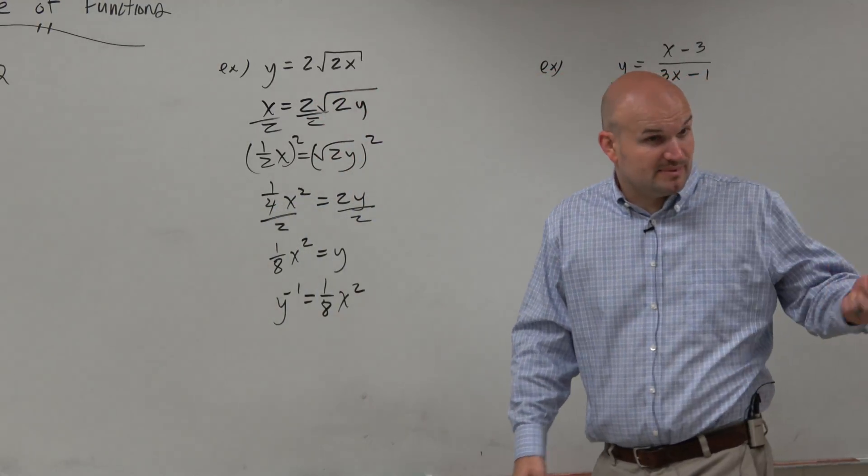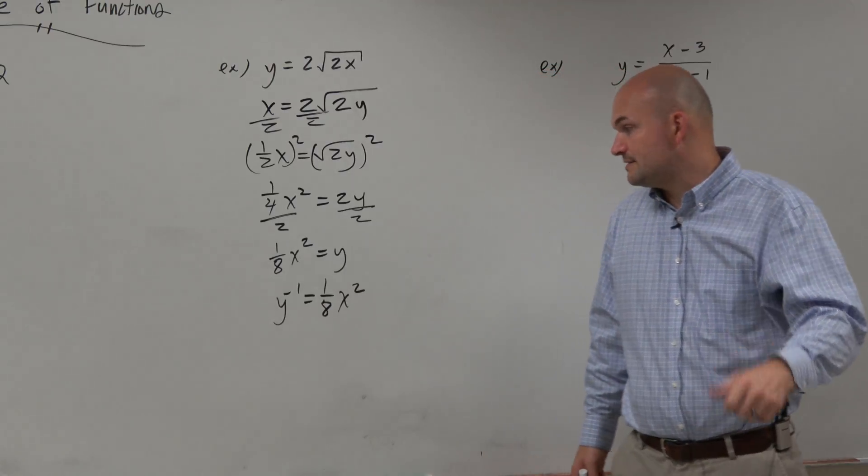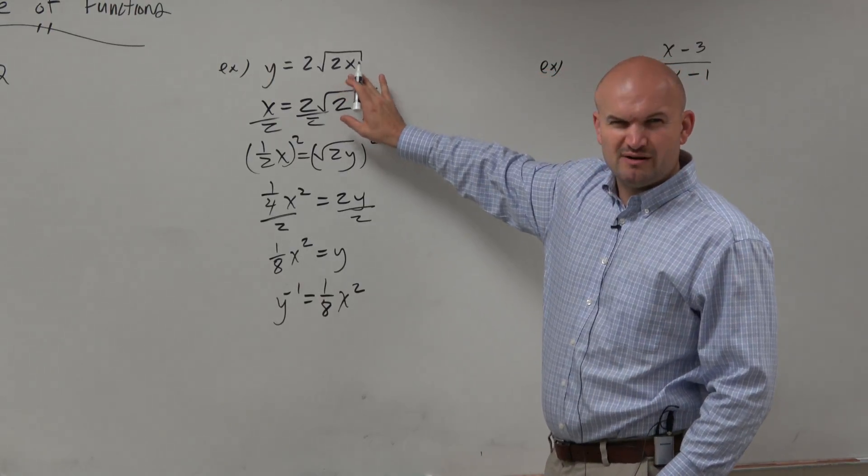Remember, dividing by 2 is the same thing as multiplying by 1 half. So 1 half times 1 fourth would be 1 eighth. Now, the question is, do we know what this graph looks like?